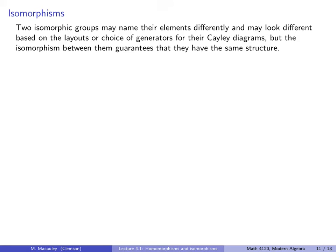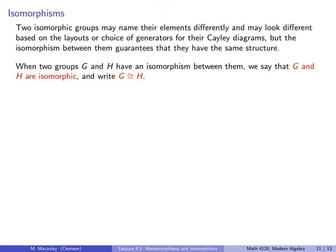Recall that an isomorphism is a homomorphism phi from G to H that is 1-to-1 and onto — a bijection from G to H that preserves structure. We say groups G and H are isomorphic. Two isomorphic groups may name their elements differently and may look different based on layouts or choice of generators for their Cayley diagrams. But once we have an isomorphism — an explicit mapping between them — that guarantees they have the same structure. We write G ≅ H.